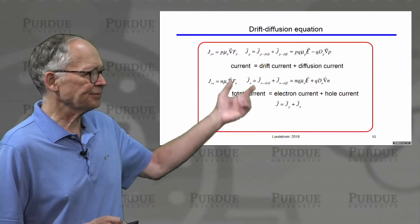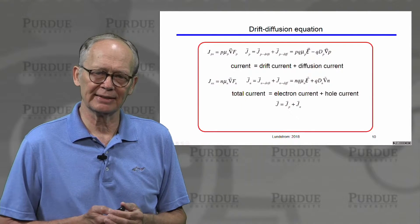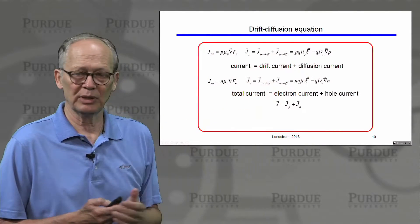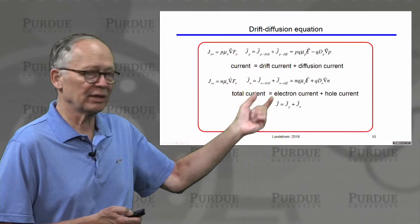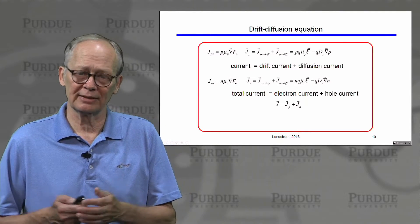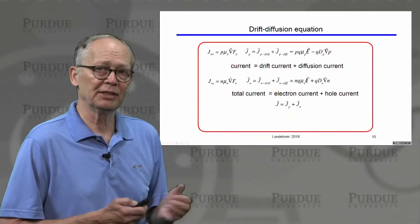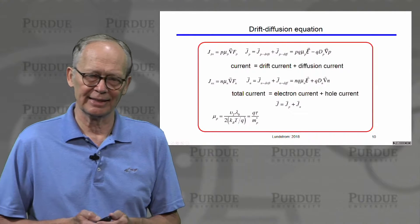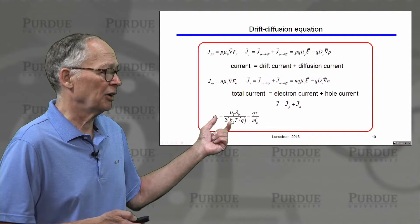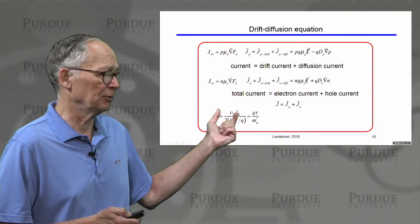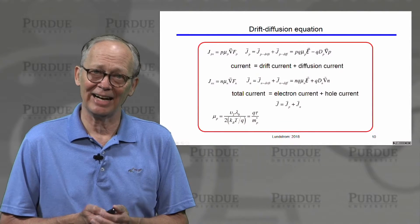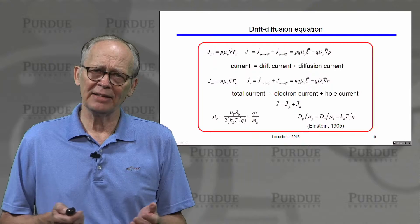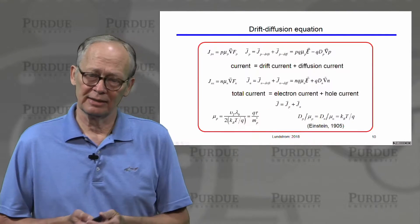The current equation is broken into two components: a drift component due to the electric field pushing carriers, and a diffusion component due to carriers diffusing down a concentration gradient. Mobility tells us how fast carriers move in an electric field; the diffusion coefficient tells us how quickly they diffuse. These two parameters are related: D over mu equals kT over q — the Einstein relation. In practice, we measure mobility and use the Einstein relation to find the diffusion coefficient.